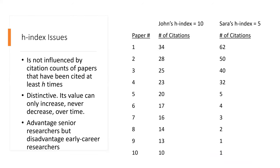We know that H-index is good for evaluating the cumulative impact of an author's scholarly output and performance. However, the H-index has some issues. First of all, the H-index is not influenced by citation counts of papers that have been cited at least H times. Second, the H-index is time-dependent, as its value can only increase, never decrease.